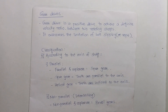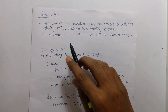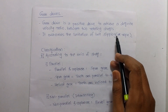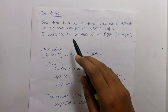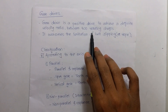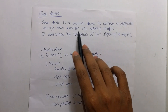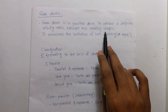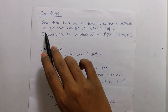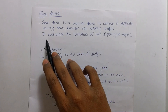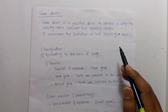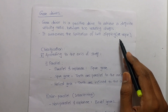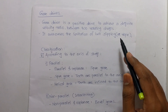A gear drive is a positive drive used to achieve a definite velocity ratio between two rotating shafts. Two gears are mounted on two rotating shafts to achieve this definite velocity ratio. Gear drives overcome the limitations of belt drives, such as belt slipping and creep.